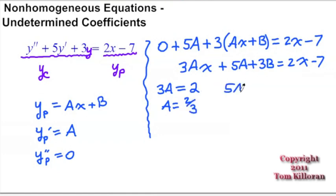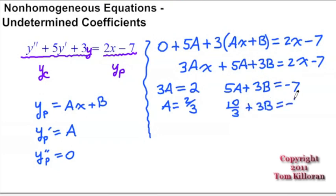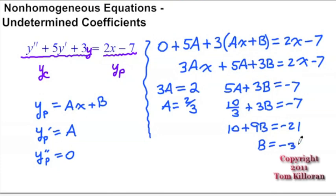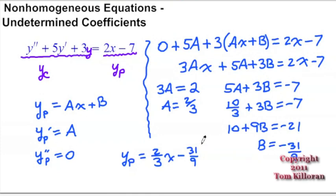The other equation is 5a plus 3b must equal negative 7. We already know a equals 2/3, so that becomes 10/3 plus 3b equals negative 7. Multiplying everything by 3 gives 10 plus 9b equals negative 21. Subtracting 10 and dividing by 9, we get b equals negative 31/9. So our particular solution is y sub p equals 2/3 x minus 31/9, and this satisfies the differential equation — that becomes our particular solution.